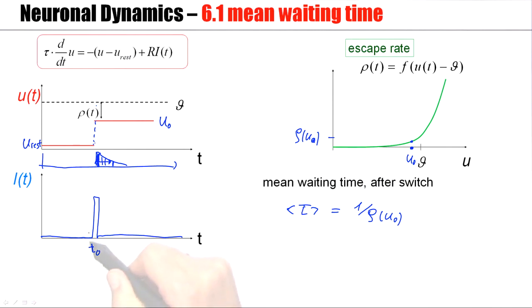Now let's look at a different input. Again it's a short current pulse, but I make the current pulse twice as big. So the jump is now twice as large, and we have a new value U₁.